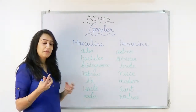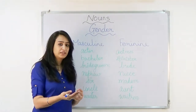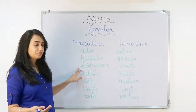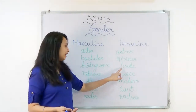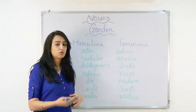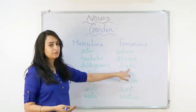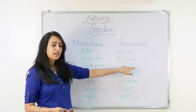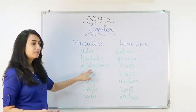A man who is about to get married is a bridegroom, and a female who is going to get married is a bride.